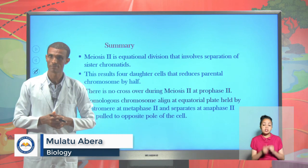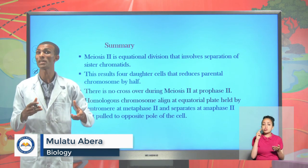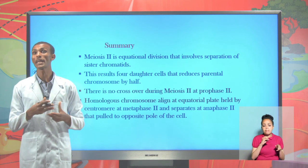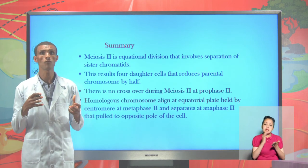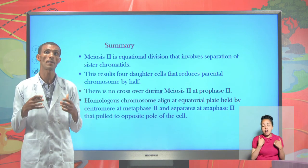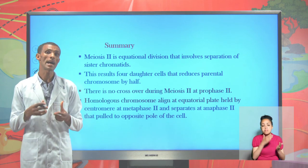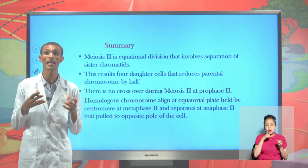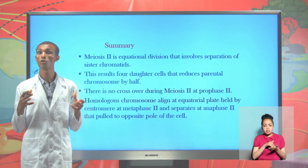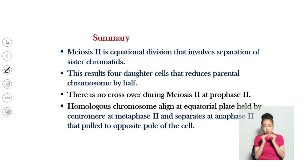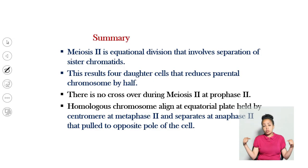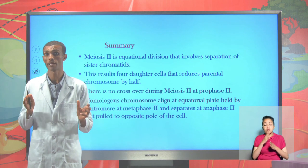In our today's lesson, we have seen that meiosis II is an equational division that involves the separation of sister chromatids. At the end of meiosis II, there is a production of four daughter cells that have half the number of parental chromosomes. As a result of crossover and exchange of genetic segments, none of the daughter cells is genetically identical. Homologous chromatids become aligned at the equatorial plane during metaphase II, and the separation of the centromere takes place during anaphase II, moving chromatids to opposite poles. Goodbye, students.